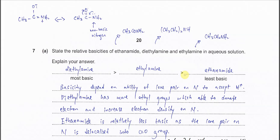Question 7 and 8: state the relative basicity of ethyl amide, diethylamine, and ethyl amine. First, you need to know the nitrogen in the amide is a non-basic nitrogen because the lone pair on nitrogen can delocalize into the carbonyl group, which means the lone pair on nitrogen is less available and less able to gain a hydrogen ion.